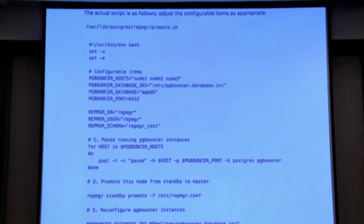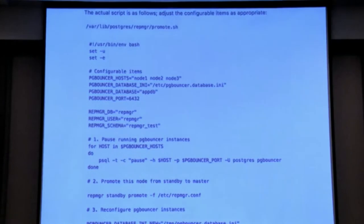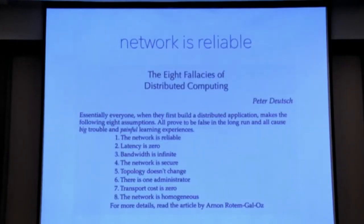This is a script from the RepManager documentation doing the second form of this trigger mechanism — it specifically deals with PgBouncers, not applications, but the idea is the same. It pauses the PgBouncer, promotes, then reconfigures the PgBouncers. So the promotion has already happened, and the reconfiguration may or may not succeed. We know this is a fallacy — there's no more discussion required.